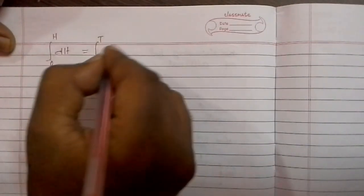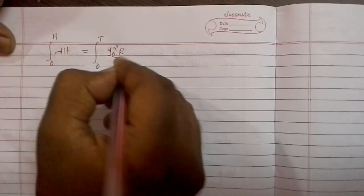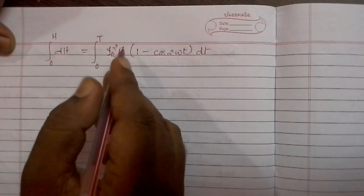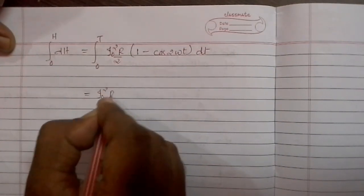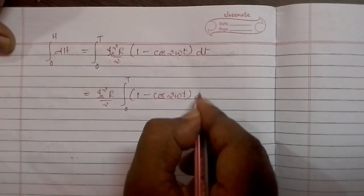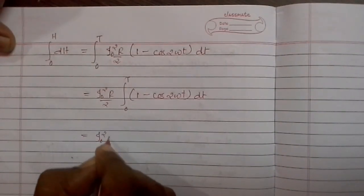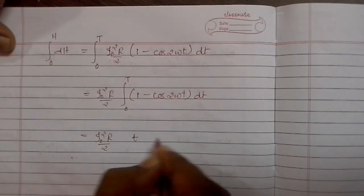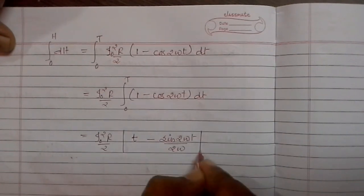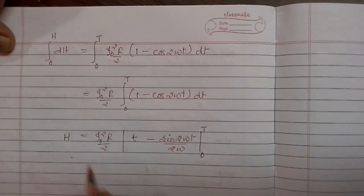Now we can integrate this. The expression gives H equals the integral from 0 to T of (I₀² R / 2) into [1 − cos(2ωt)] dt. Since I₀² R / 2 is a constant, we write I₀² R / 2 times the integral from 0 to T of [1 − cos(2ωt)] dt. That equals I₀² R / 2 times [t − sin(2ωt) / (2ω)], evaluated from 0 to T.